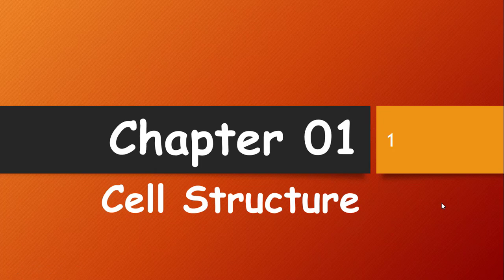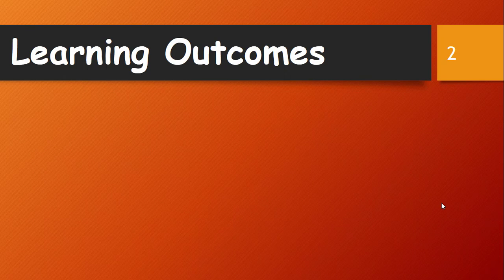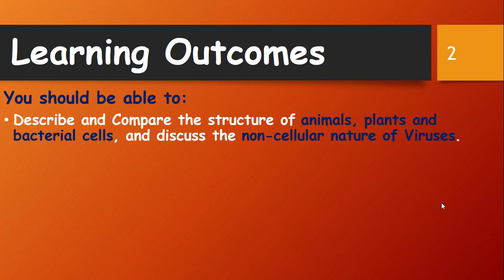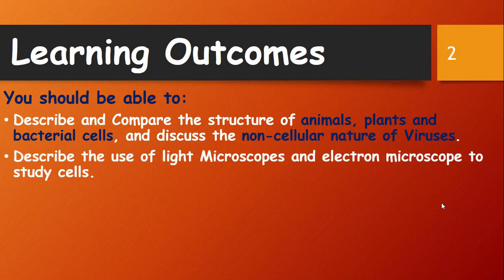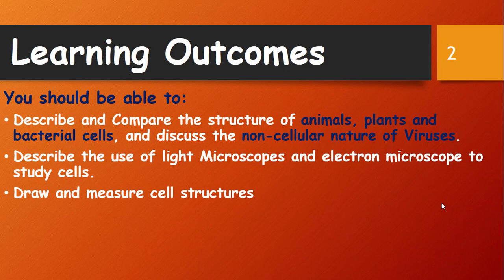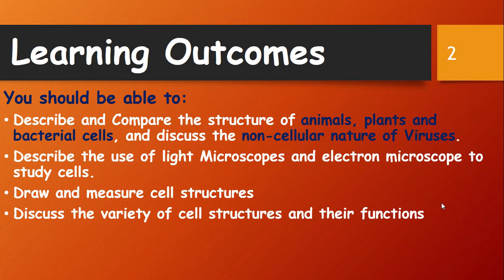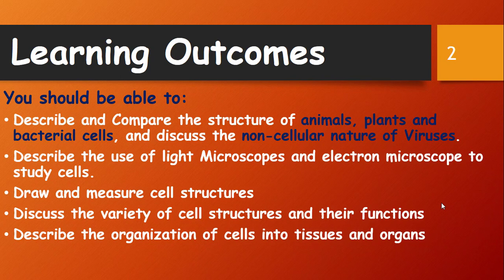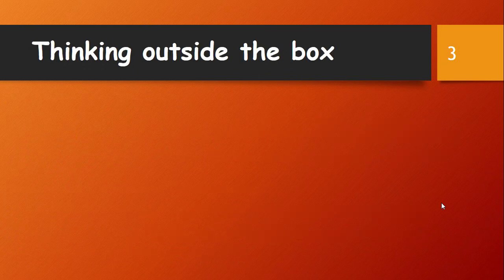Hi there students, today we begin our lesson with Chapter 1: Cell Structure. After reading this chapter you should be able to: describe and compare the structure of animal, plant and bacterial cells; discuss the non-cellular nature of viruses; describe the use of light microscopes and electron microscopes to study cells; draw and measure cell structures; discuss the varieties of cell structures and their functions; describe the organization of cells into tissues and organs; and apply the role of ATP in cells.